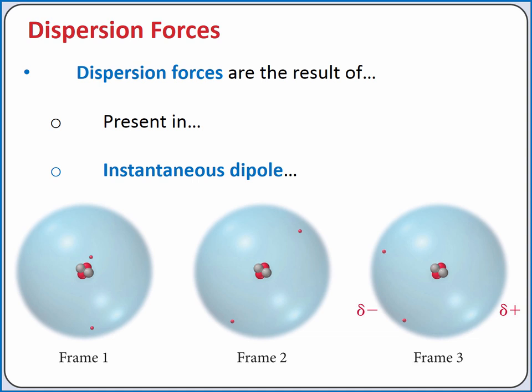A single helium atom has two electrons, and those electrons have to be somewhere. In one instant, those electrons may be on opposite sides of the nucleus. But in another instant, depicted in frame 3, the electrons are both closer to one side of the atom than the other. In that instant, we set up what's called an instantaneous dipole. This dipole may only last for a tiny fraction of a second.